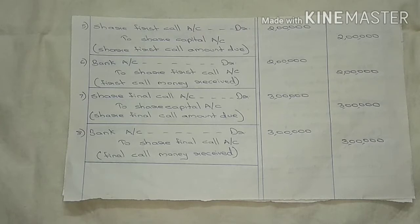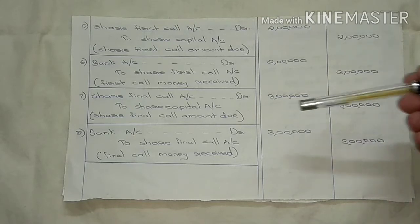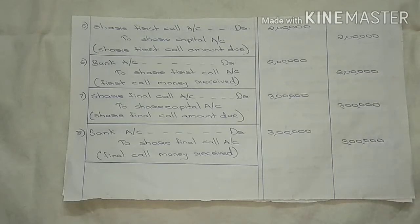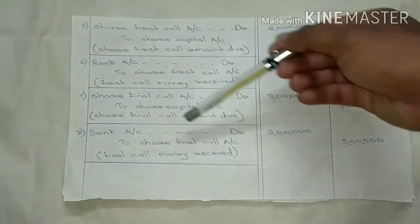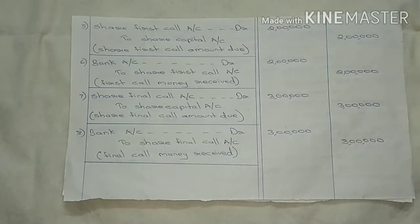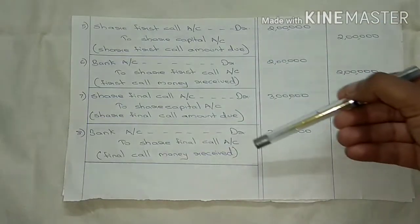Allotment, First Call, Final Call — ₹3 lakhs. Bank Account debited to Share Final Call Account — Final Call money received: ₹3 lakhs. This completes the Final Call entry. That's clear.